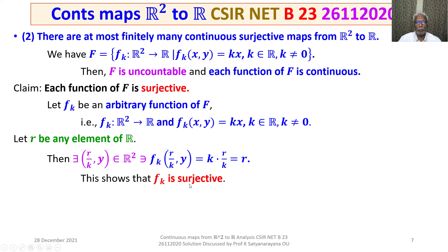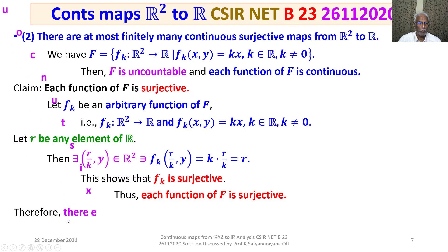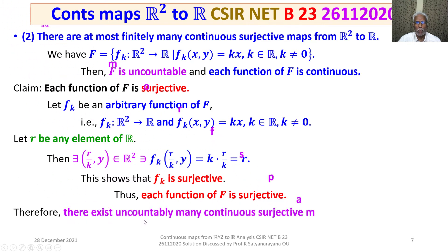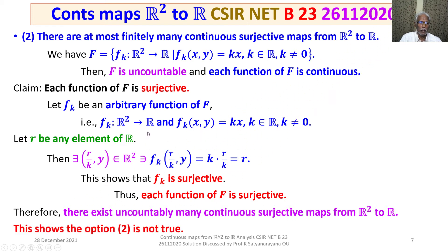Since F_K is an arbitrary function of capital F, each function of F is surjective. Therefore there exist uncountably many continuous surjective maps from R square to R. This shows option 2 is not true — option 2 claims at most finitely many, but we have uncountably many. Therefore option 2 is not true.